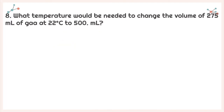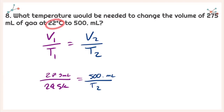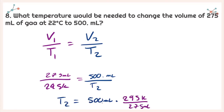For problem 8, it asks what temperature would be needed to change the volume of 275 milliliters of gas at 22 degrees Celsius to 500 milliliters? I'm going to write down my equation: V1 over T1 is equal to V2 over T2, and plug in everything I know. The only change I've made so far is 22 degrees Celsius to 295 degrees Kelvin. Solving for T2 and plugging all of that into my calculator, I get a new temperature of 536 degrees Kelvin.